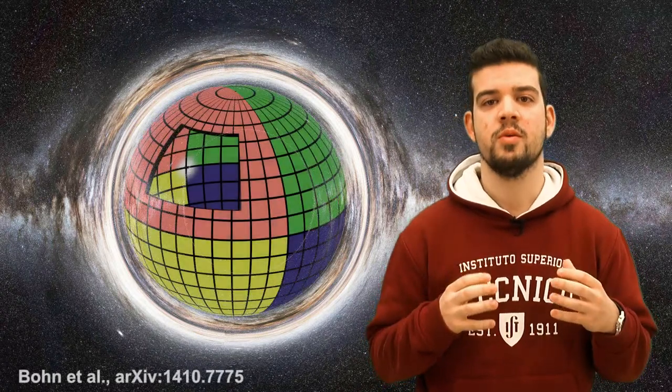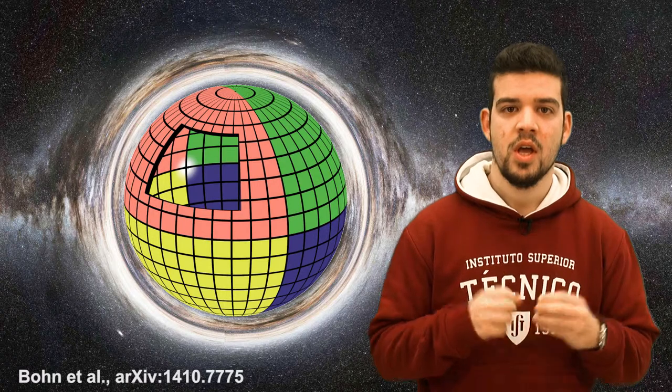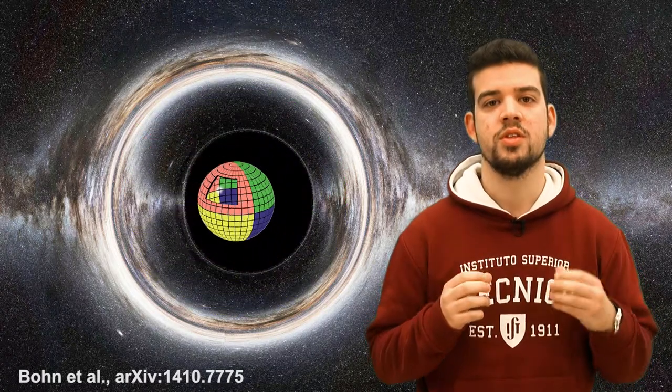Imagine you have a background image. It can be an astonishing image of the Milky Way, or as a more academical example, a colored sphere. If the photons that come from the background sources pass far away from the black hole, they just continue in straight lines.